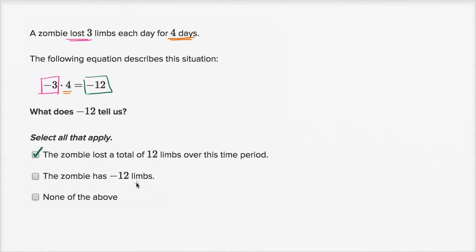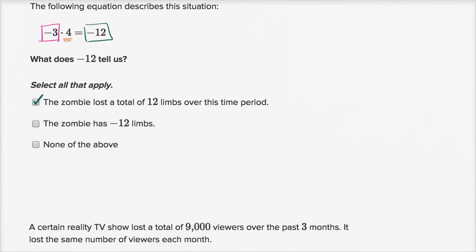Let's see what are these other ones. The zombie has negative 12 limbs. Well, I don't even know what a negative limb would be. We don't know how many limbs the zombie started with. The zombie might be some type of centipede zombie or something, it might have had 100 limbs, and if it lost 12 of them, it would now have 88 limbs. The zombie might have had 12 limbs and now it has zero limbs. I don't even know how you get to negative limbs. So I don't think this makes sense. I'm not going to pick none of the above because I agree with this first choice. Let's do one more of these.